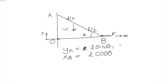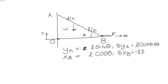We can also say that the x coordinate of point B is equal to L cos theta. This implies that delta y_A is equal to L cos theta · delta theta, and delta x_B is equal to minus L sin theta · delta theta.